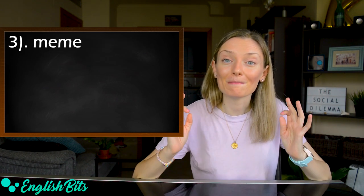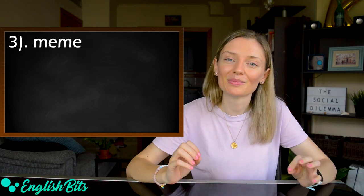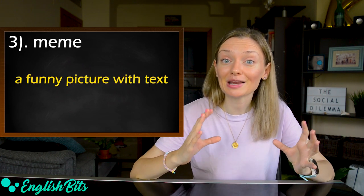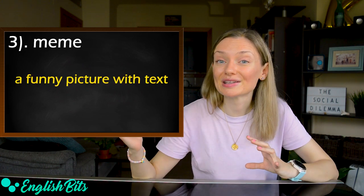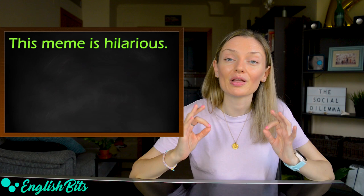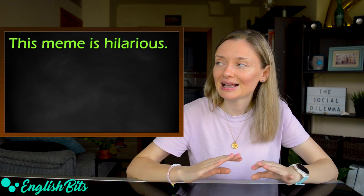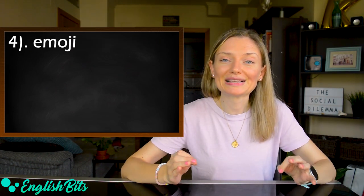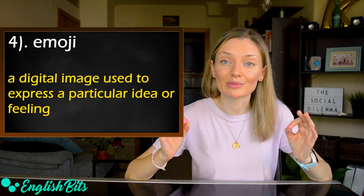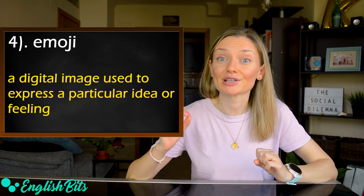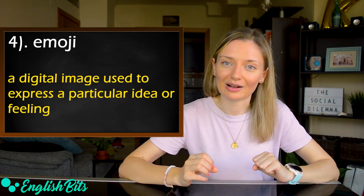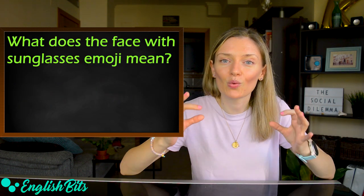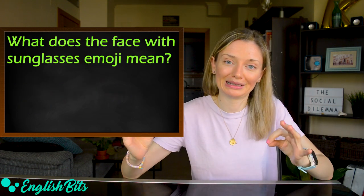Number three: meme — be careful with the pronunciation, meme. It's a funny picture with text. For example, this meme is hilarious. Number four: emoji. It's a digital image used to express a particular idea or feeling. For example, what does the face with sunglasses emoji mean?